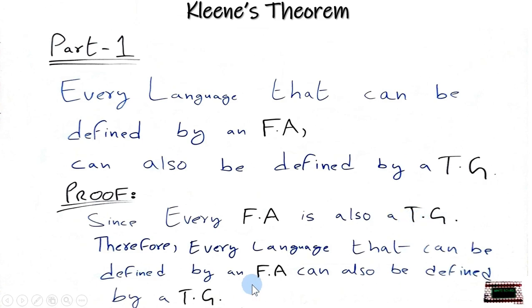So if we are drawing an FA that means that it is also a TG. So every FA form is also a TG. So this is the theoretical proof. Now for some examples.